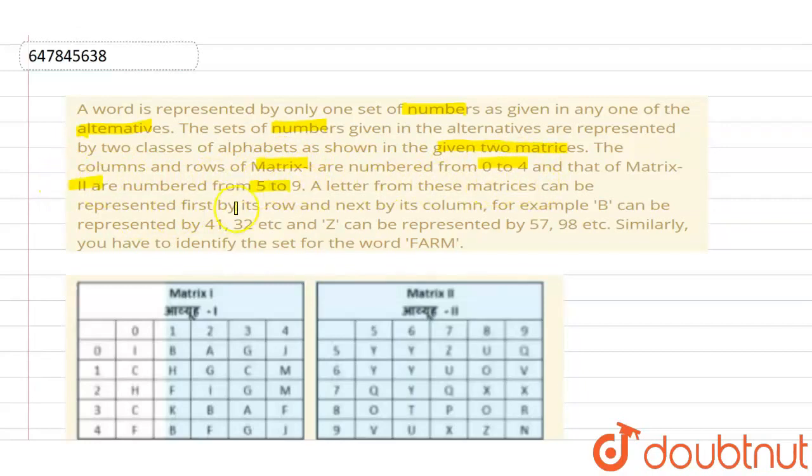A letter from these matrices can be represented first by its row and next by its column. For example, B can be represented by 41, 32, etc. And Z can be represented by 57, 98, etc. Similarly, you have to identify the set for the word FARM.